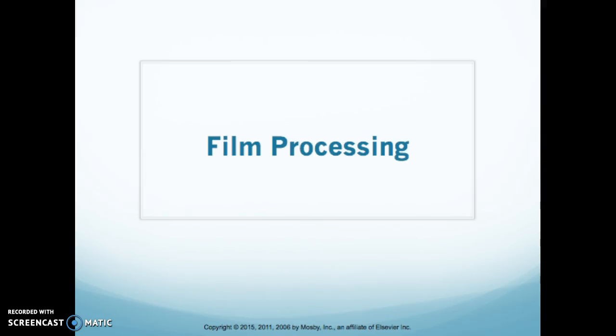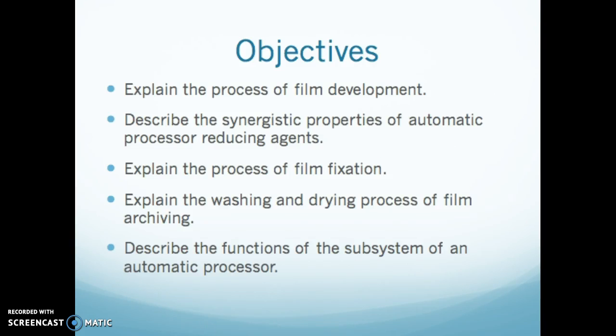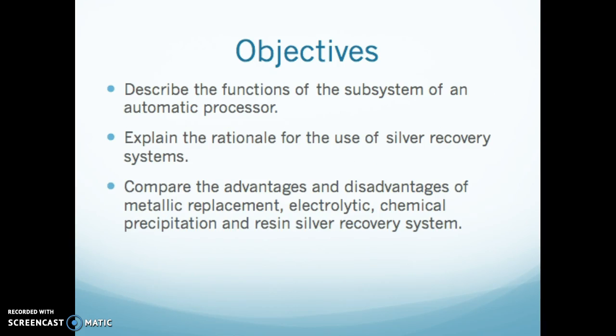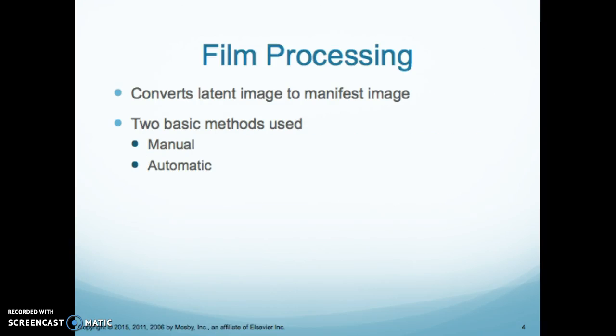We're going to talk today about film processing and what's involved with film processing. You have some objectives here, make sure you read them and understand them and be able to answer the questions. So with film processing, our goal is to convert the latent image to the manifested image. There are two basic types: manual and automatic. Manual is pretty outdated; automatic processors are still semi-common.